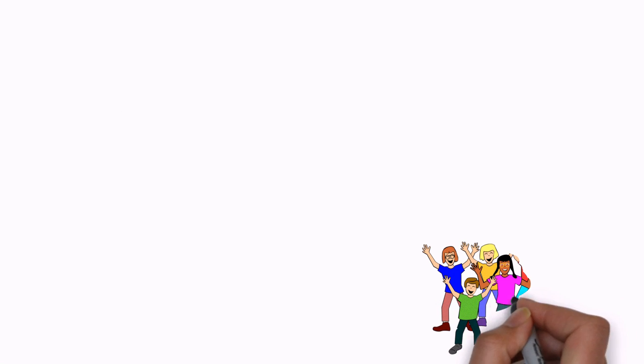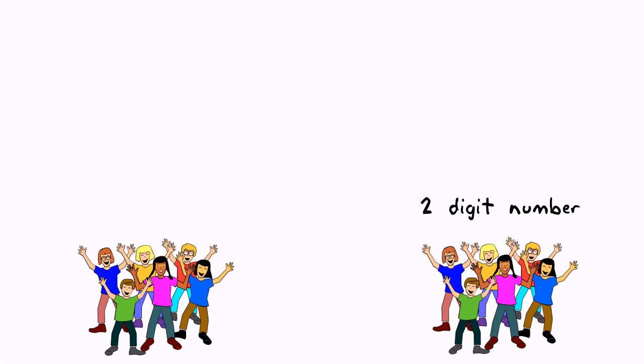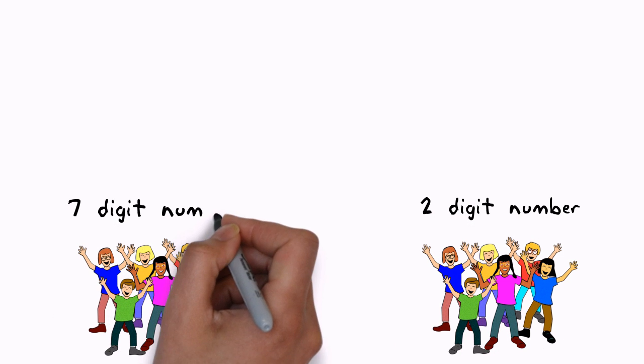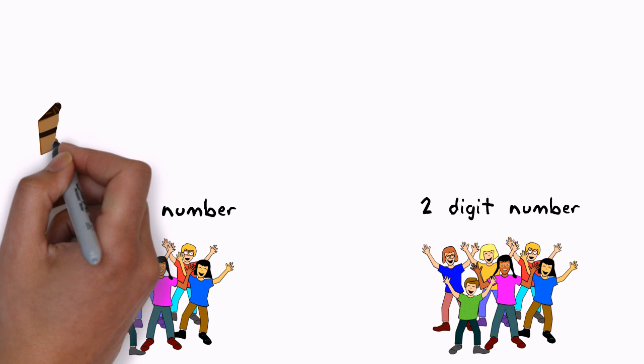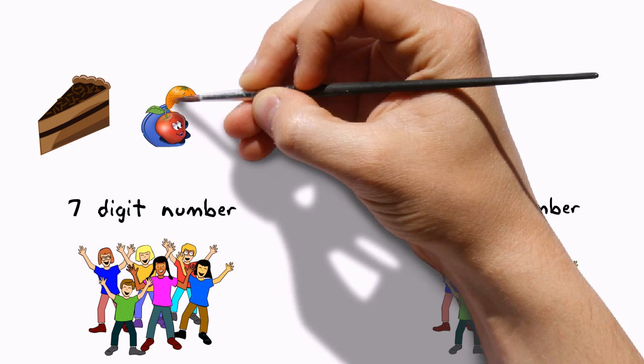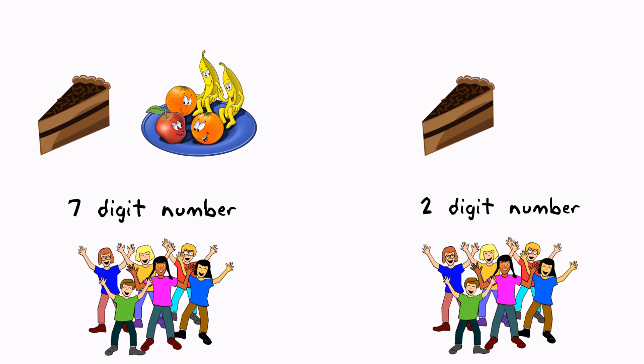In one experiment, several dozen undergraduates were divided into two groups. One group of students was given a two-digit number to remember, while the other group had to memorize a seven-digit figure. They were then instructed to walk down a hall where they were each offered a snack of either a slice of chocolate cake or a bowl of fruit salad. The students with seven digits to remember were nearly twice as likely to choose the cake as students given two digits.